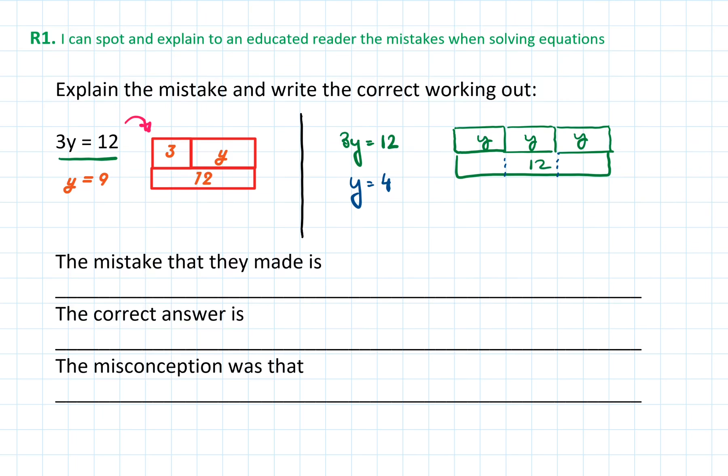But if we would use this bar model, the answer would be 9. The mistake that they made is they drew the bar model incorrectly. The correct answer is, as we have shown on the right-hand side, y equals to 4.